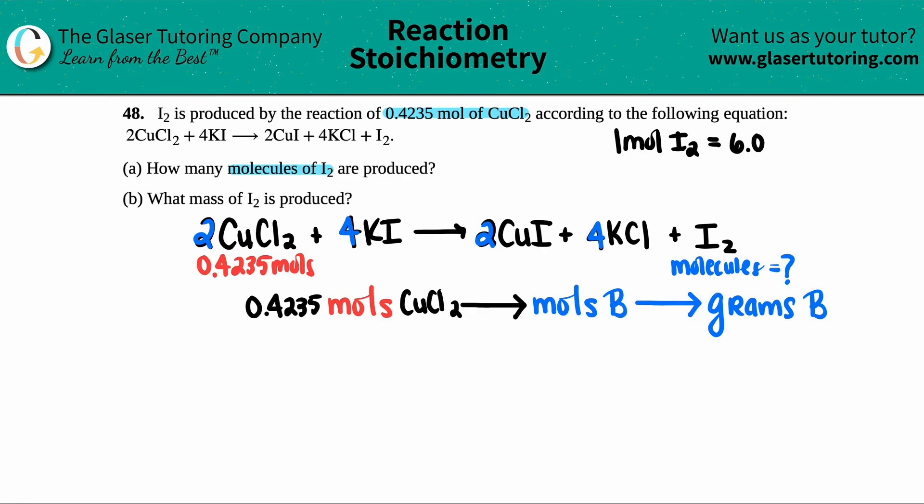One mole of I₂ equals Avogadro's number, right? 6.0. I believe it's 6.062 times 10 to the 23rd. I think it might actually be 0.6. Yeah, this is basically good. 6.0622 times 10 to the 23rd. Molecules of I₂.